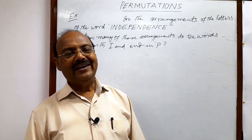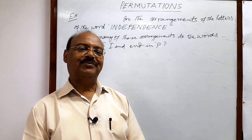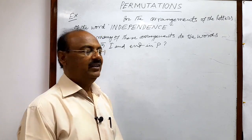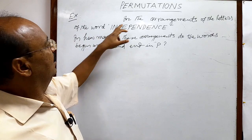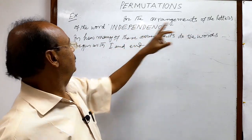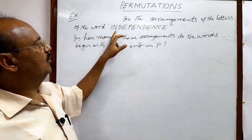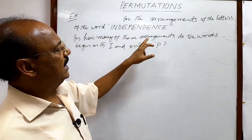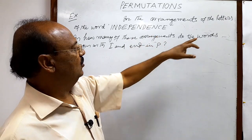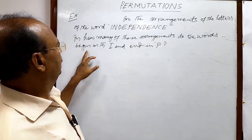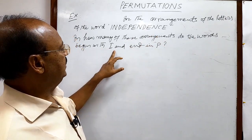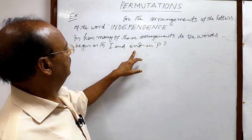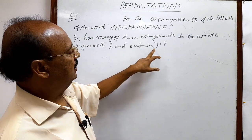Welcome students, let us see a very interesting question from the topic permutation. The question is: in the arrangements of the letters of the word independence, in how many of these arrangements do the words begin with I and end in P?